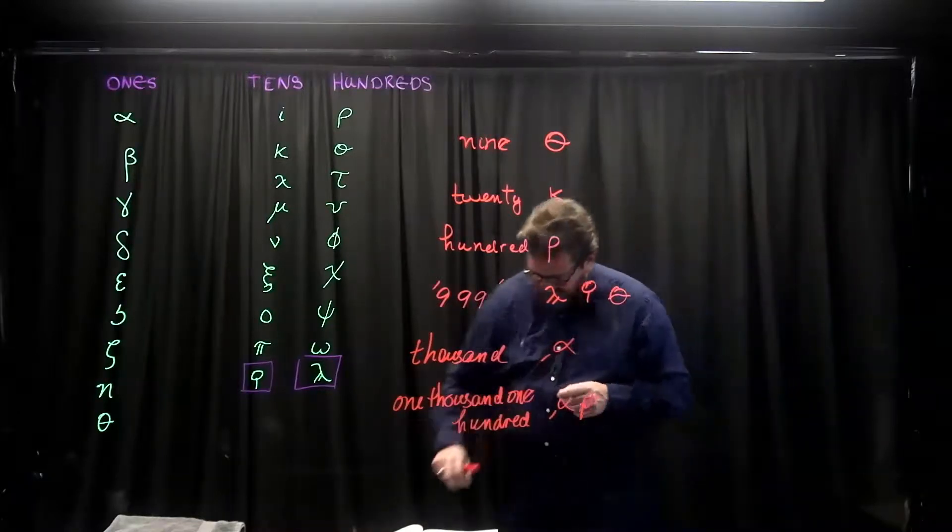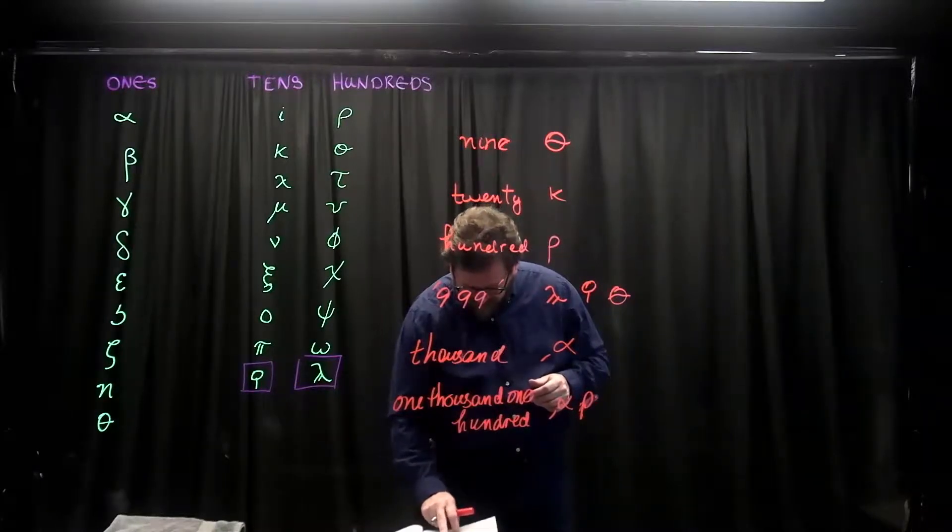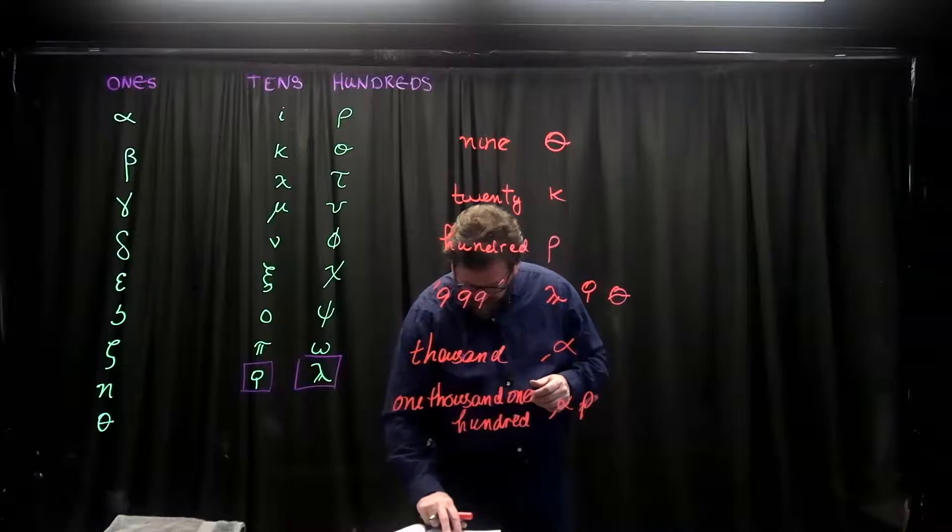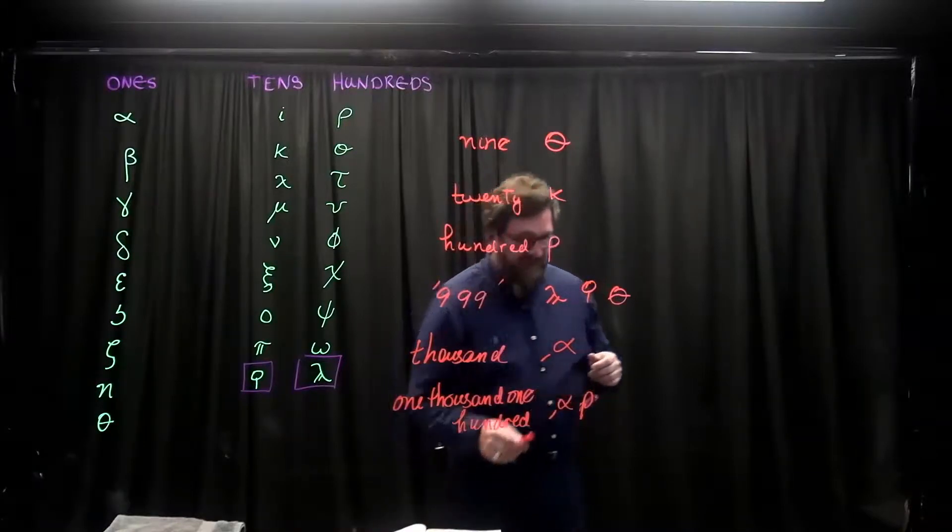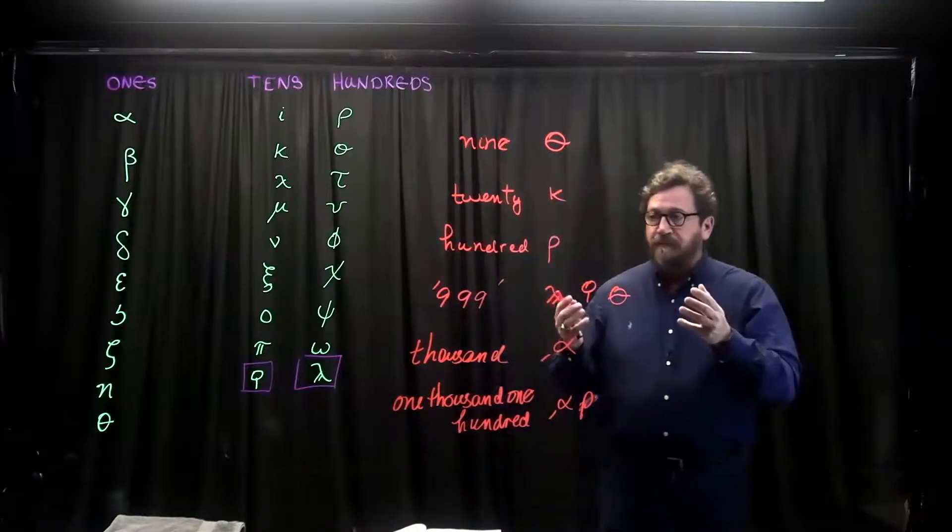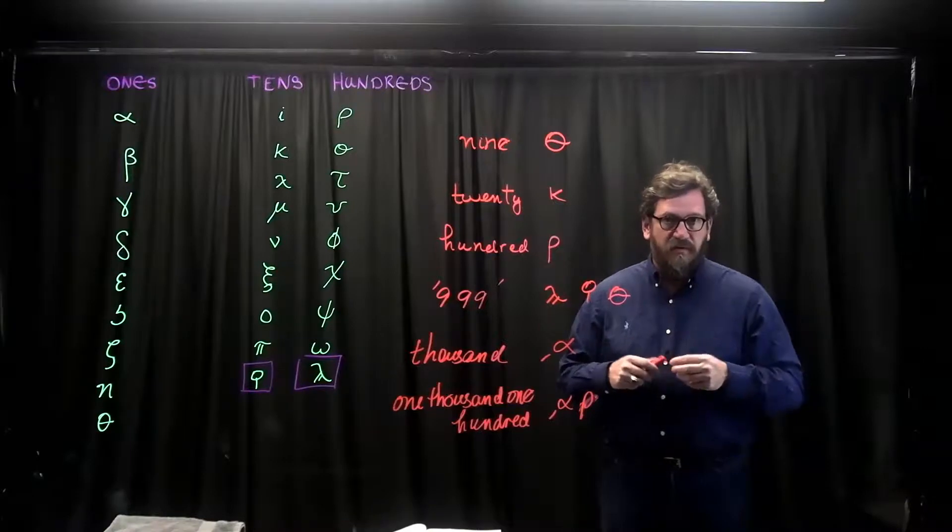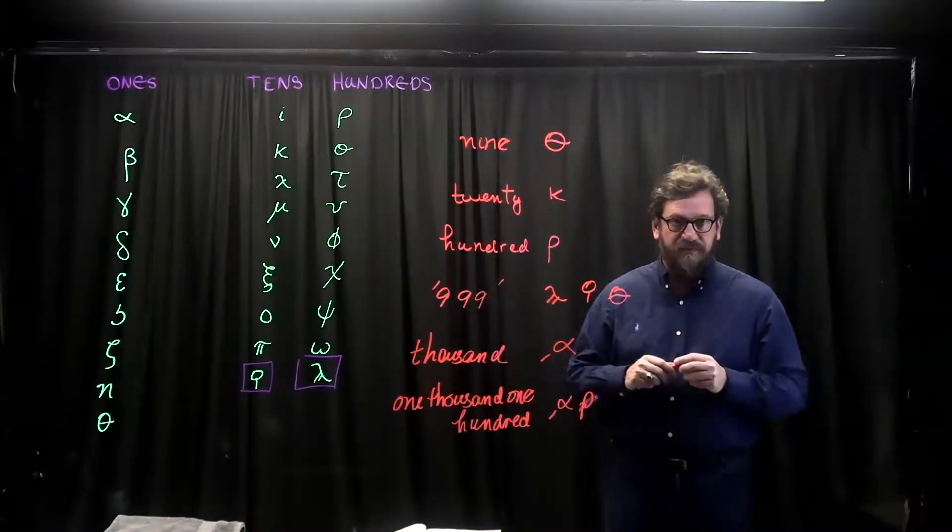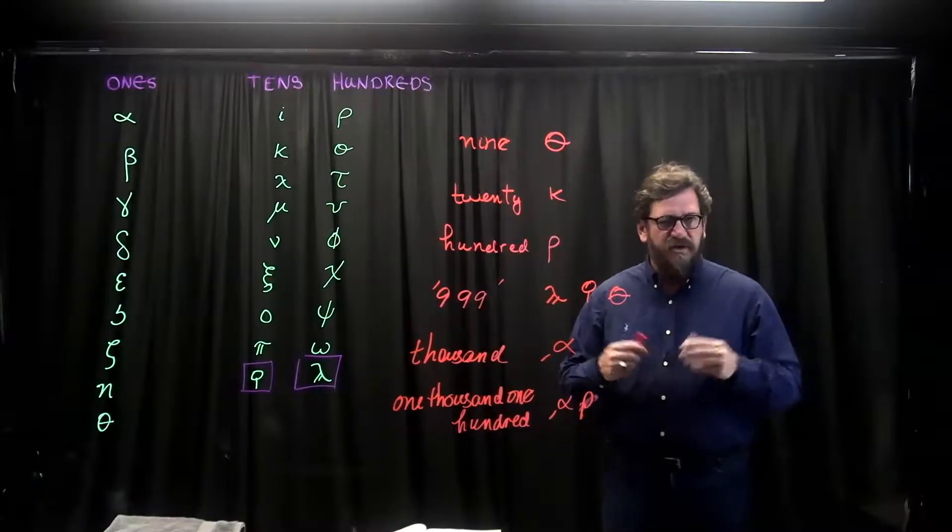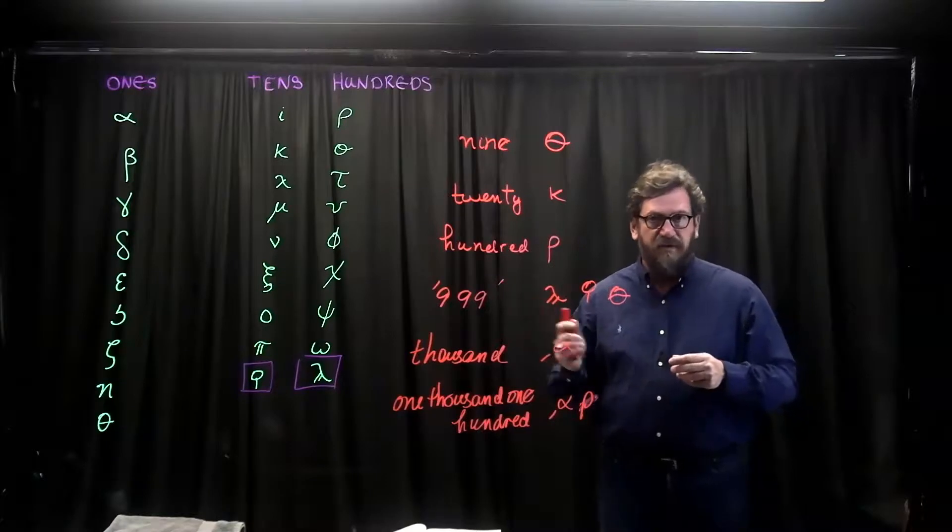Now, with this being said, the Greeks are able to do arithmetic pretty much like what we're going to want to do, except that we're going to have to deal with this idea that we don't have simply nine symbols. We have nine times three, 27 symbols.